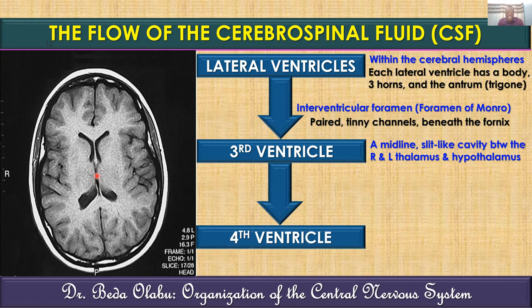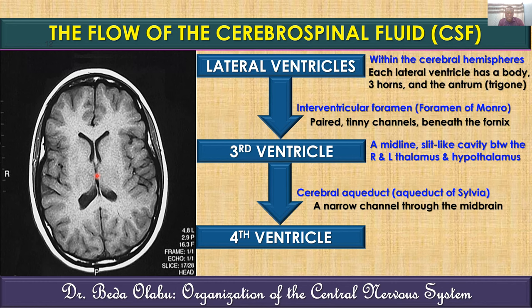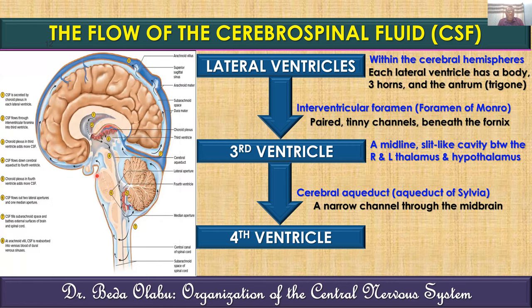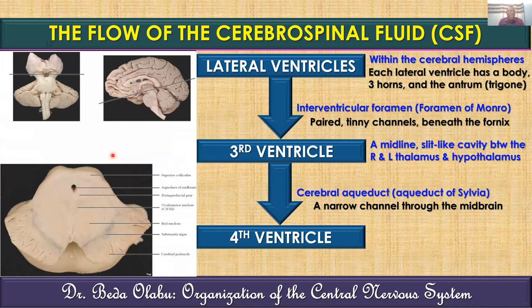From the third ventricle, CSF proceeds to the fourth ventricle via another narrow channel — the cerebral aqueduct of Sylvius — which traverses through the midbrain. On a cross-section through the midbrain, the aqueduct appears as a very narrow channel, making it a common site of obstruction in what is called aqueductal stenosis or aqueductal atresia.